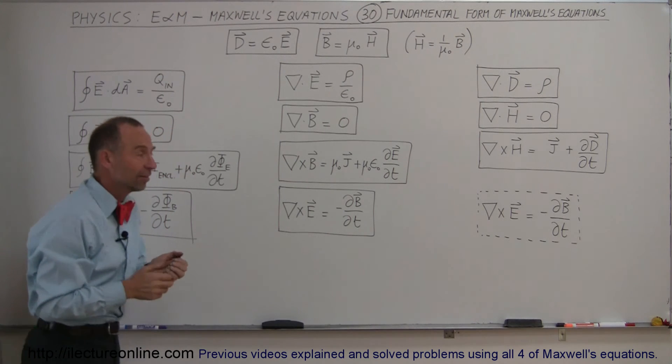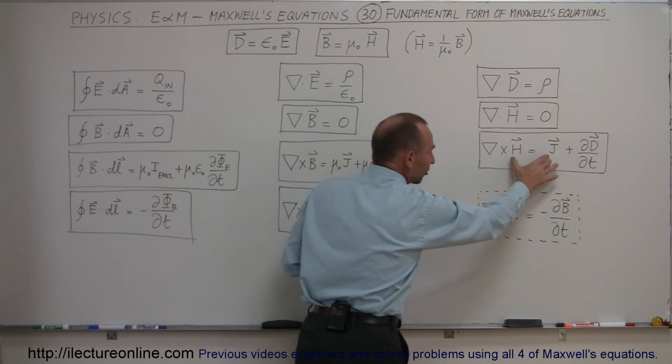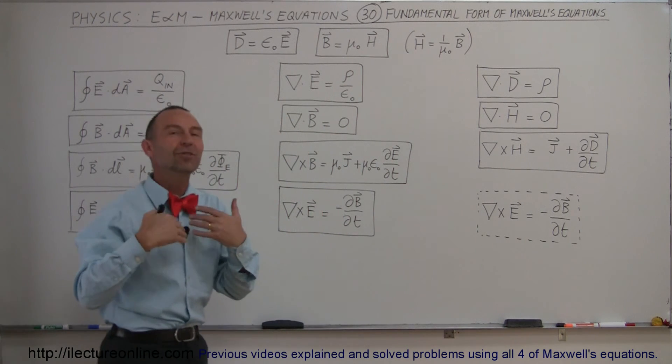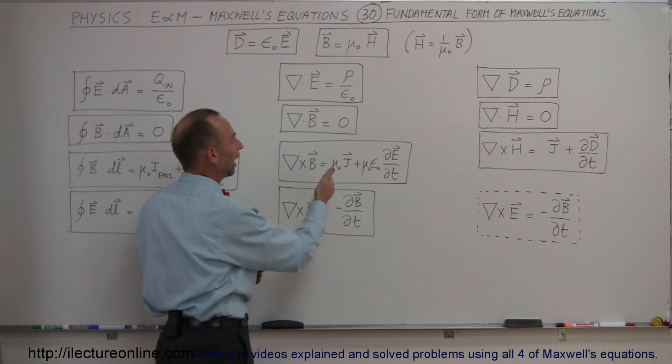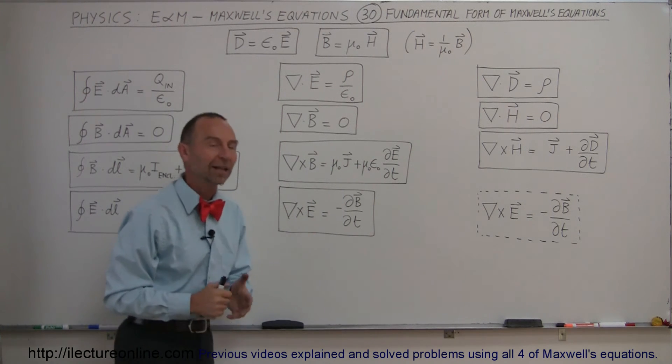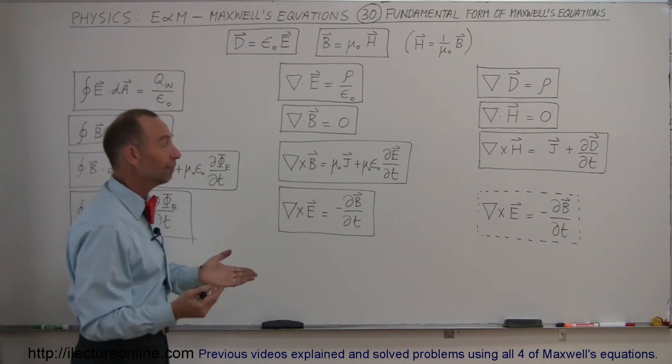Again, it's personal taste. I personally don't like this form. I know it looks simpler and easier, but it doesn't help me understand what it means, and so therefore I like to stick with the original form. I don't mind the mu sub naught and epsilon sub naught, I understand what B field is, I understand what electric field is, so I like this equation better.